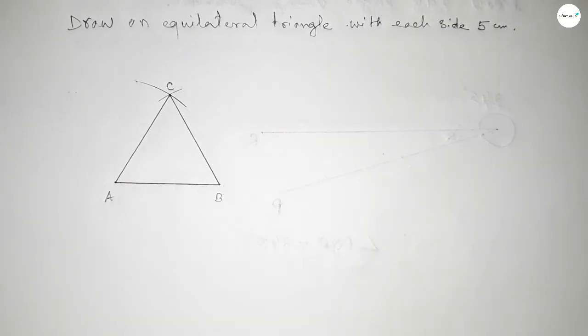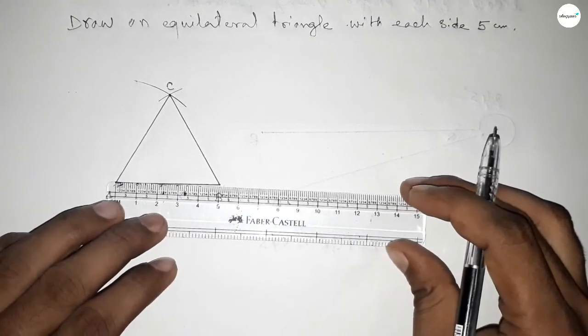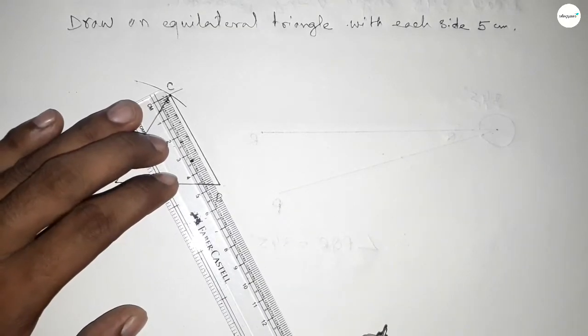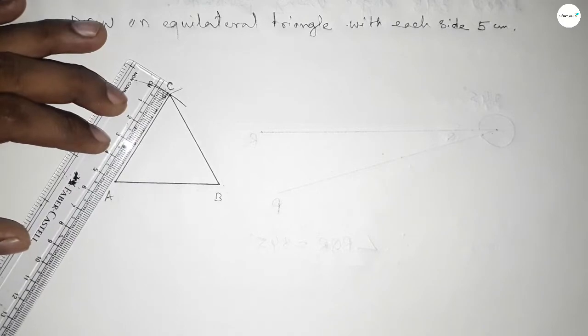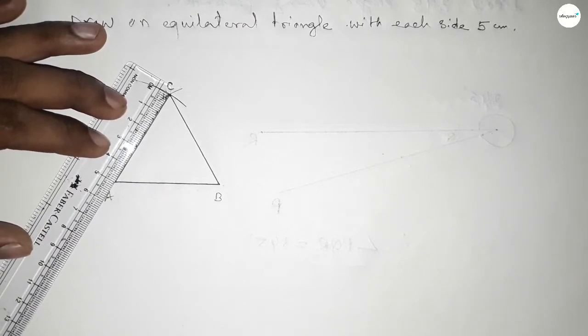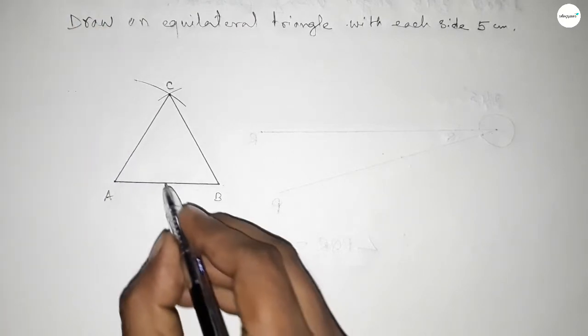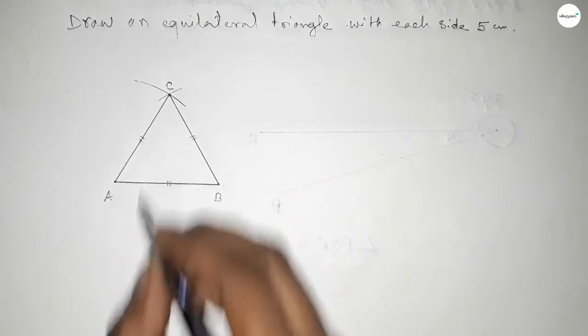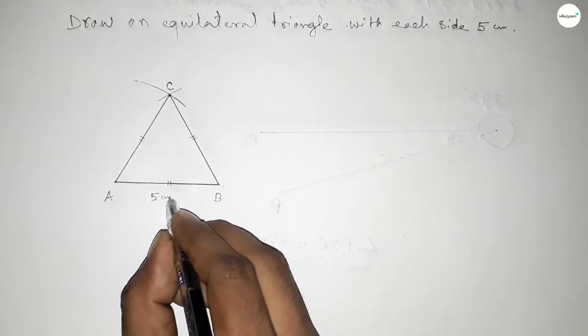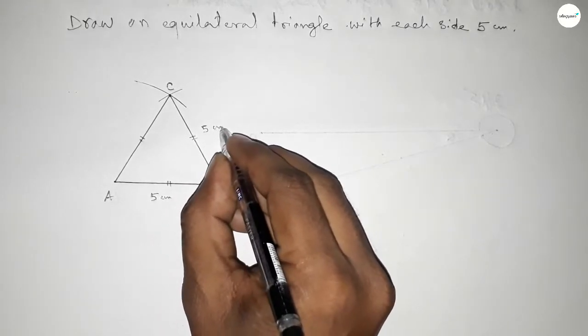Now checking all the sides. This is 5 centimeters, this is also 5 centimeters, and this is 5 centimeters. Now mark the equal sign on the 3 sides.